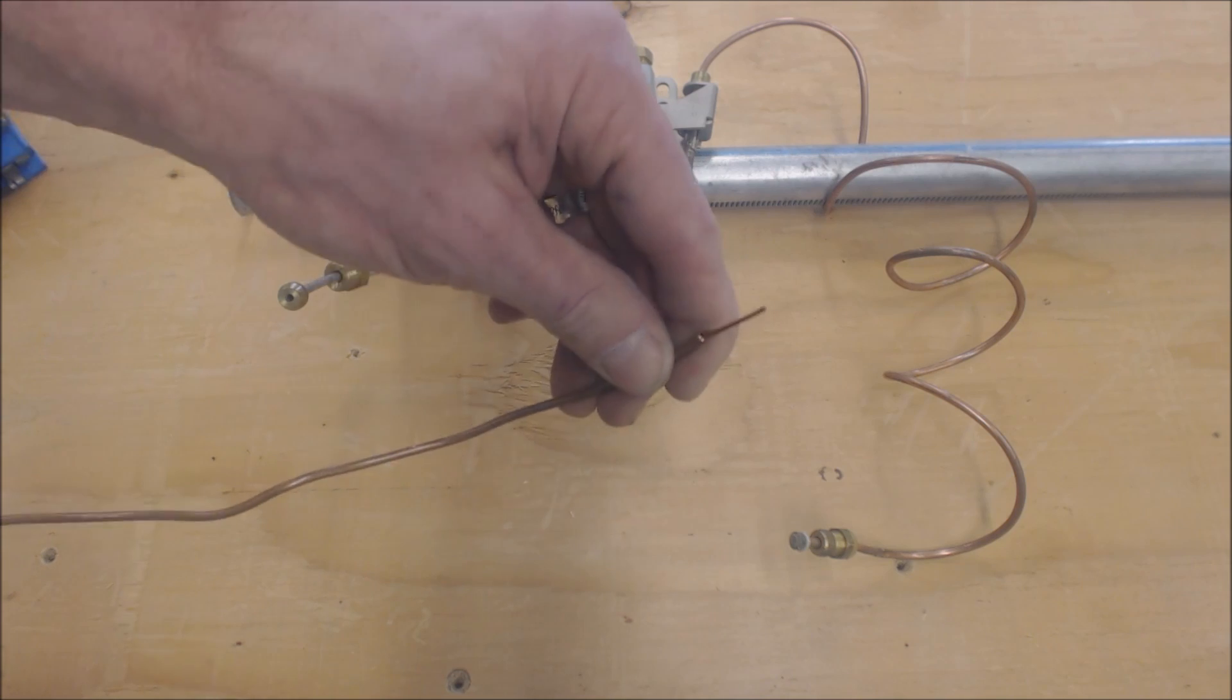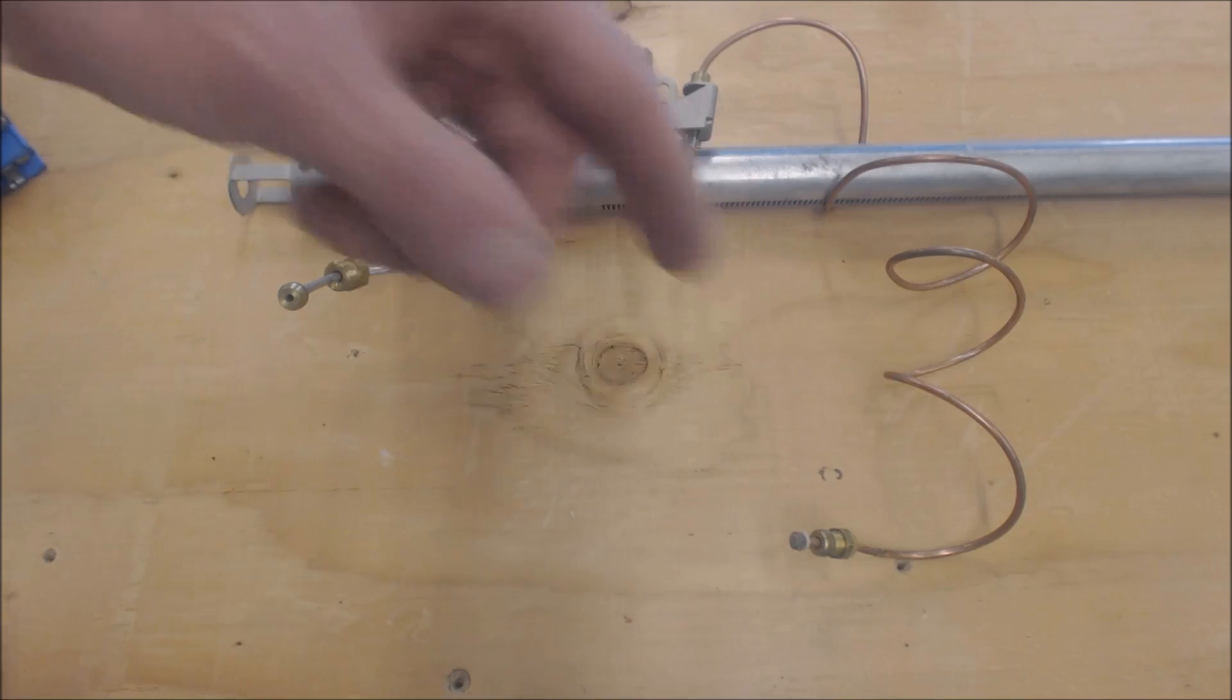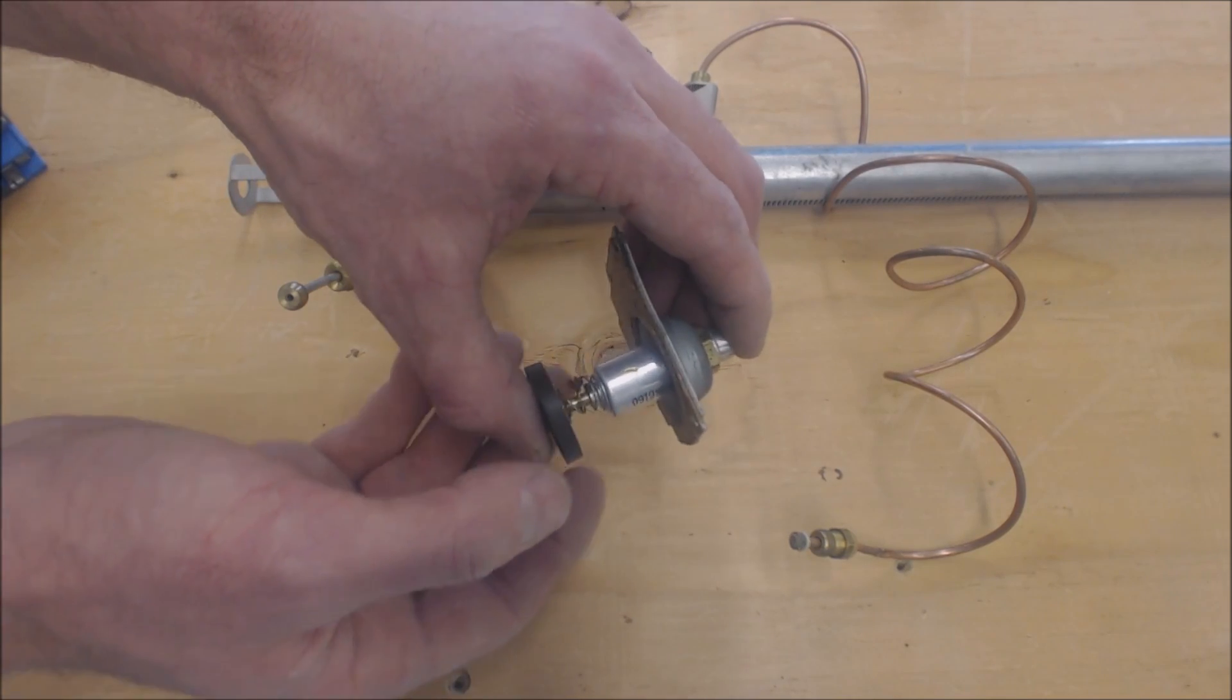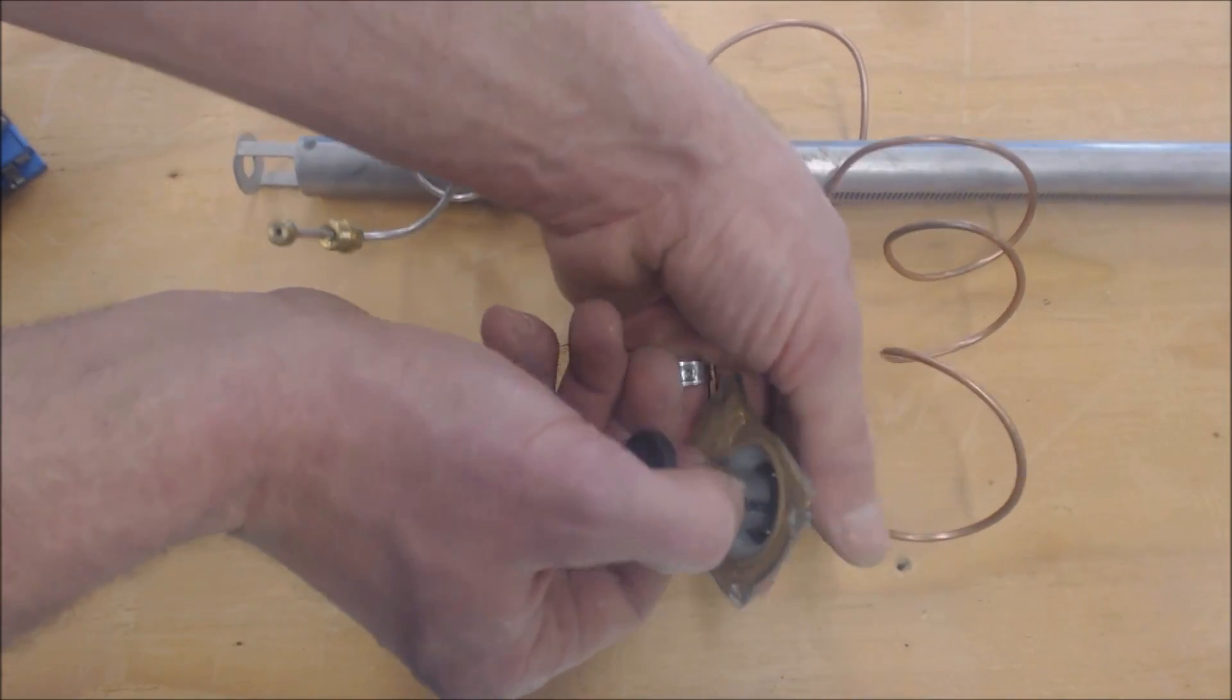Any time you heat this rod up, you're sending DC millivolts over to here. We're going to see how this DC millivolt solenoid works, so we're going to connect this in and then heat this up.